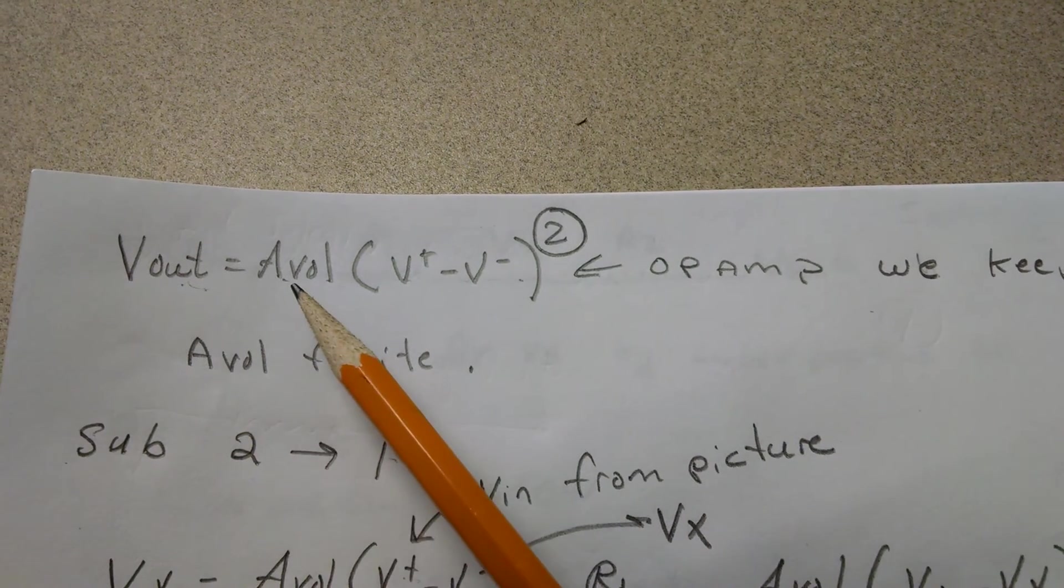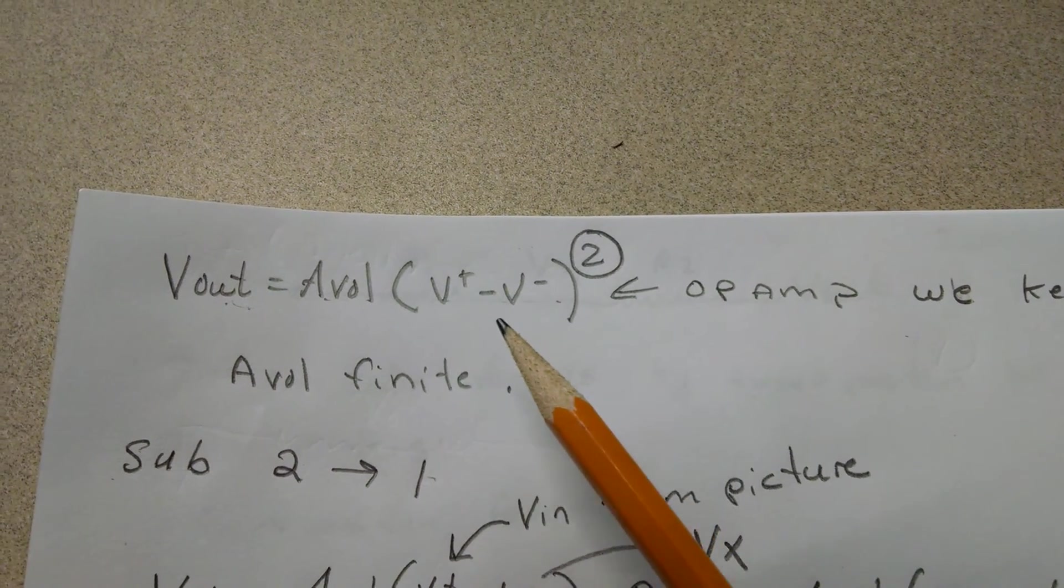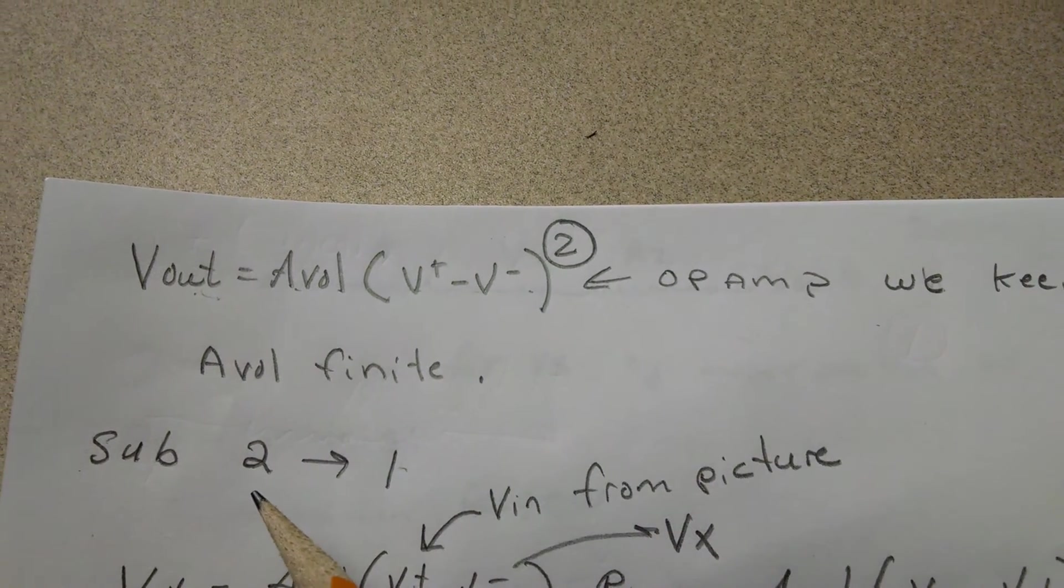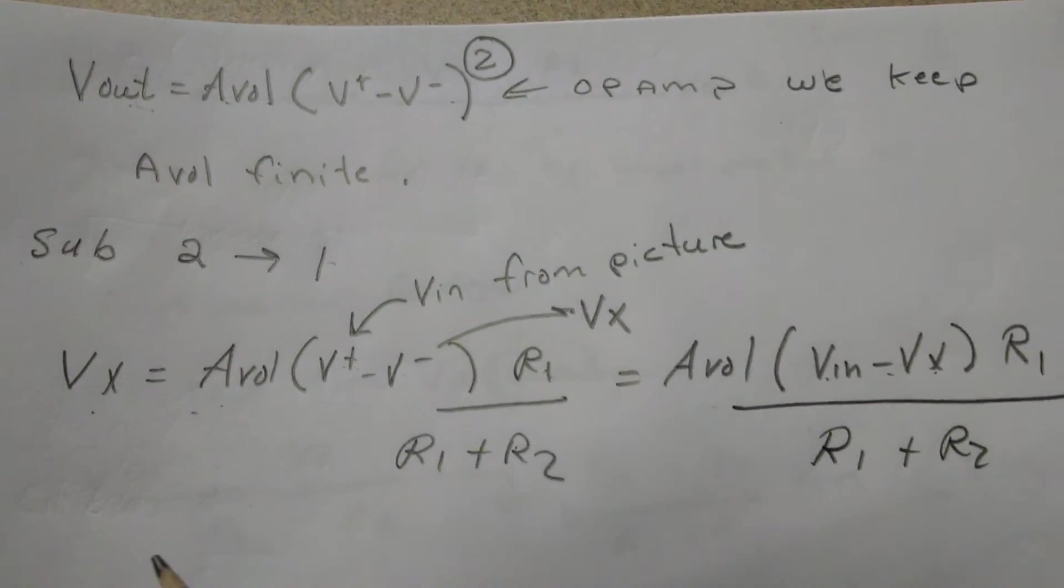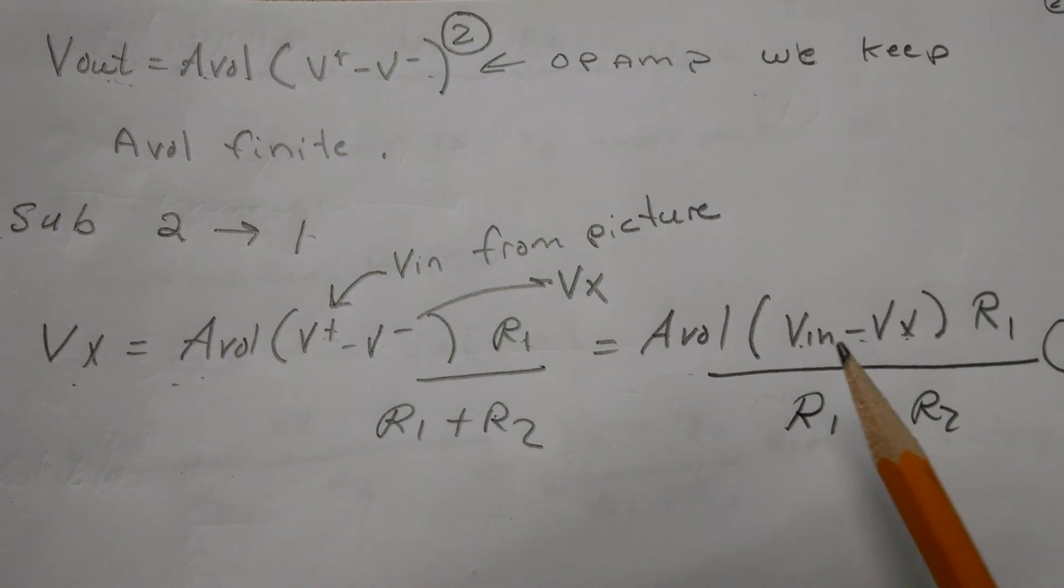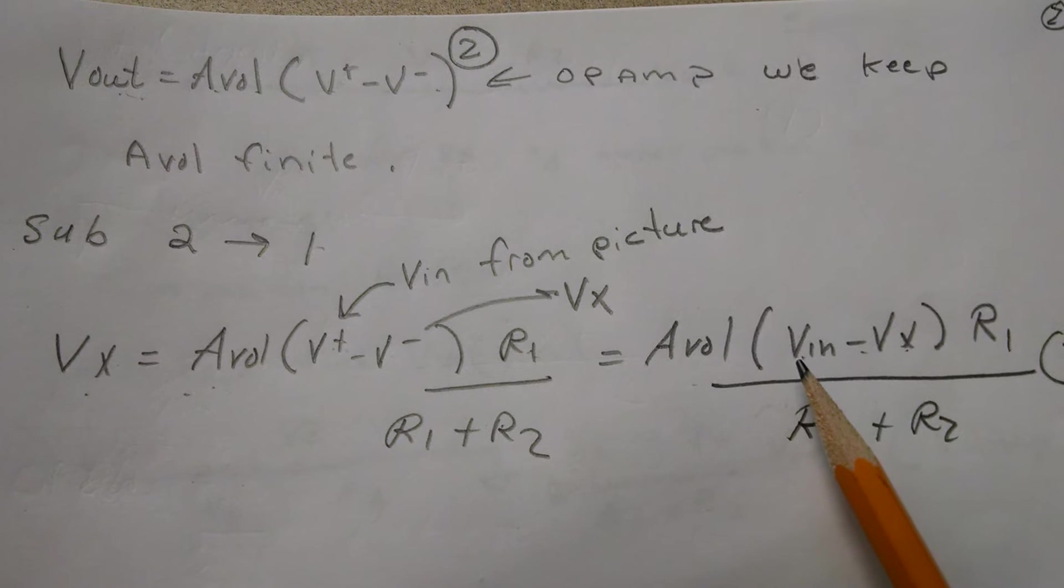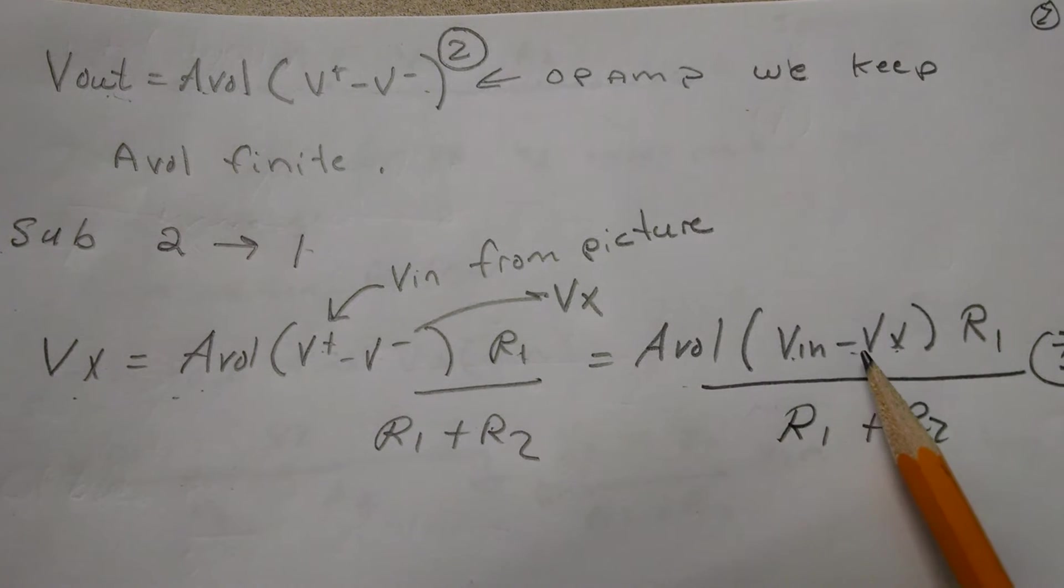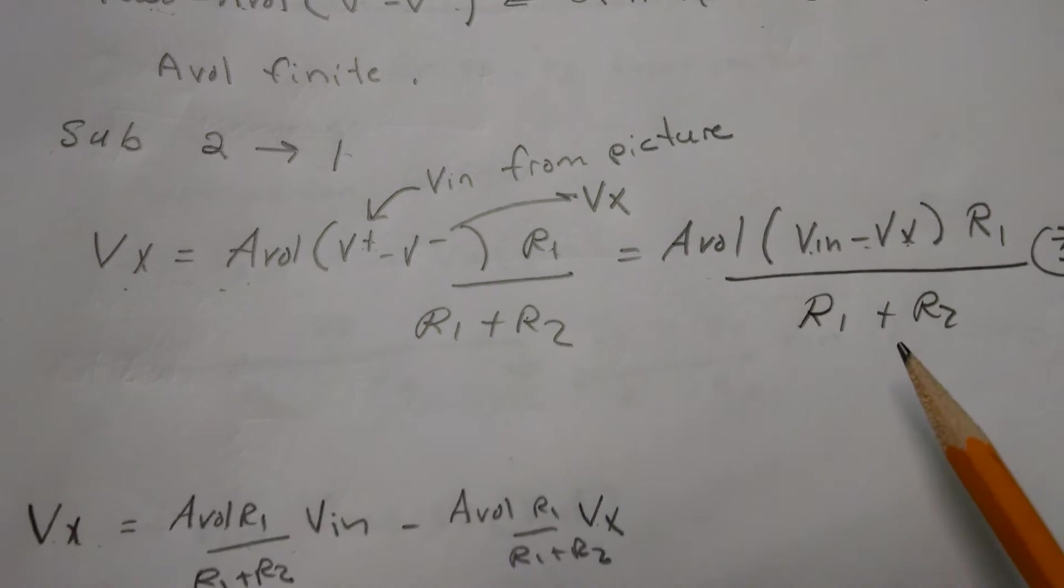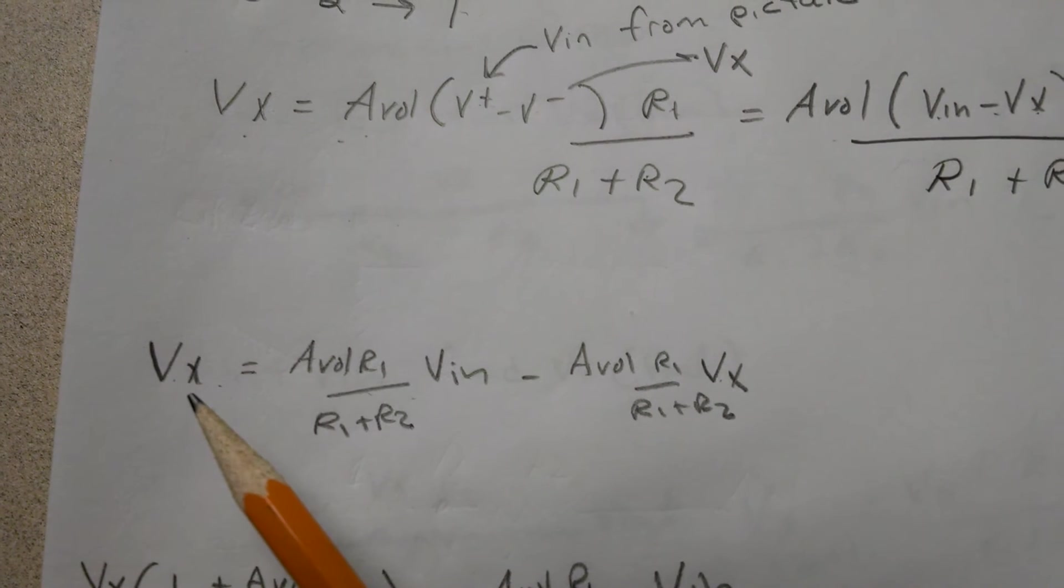Vout equals the open-loop gain times the difference between the two inputs. We substitute equation 2 into 1, and we get Vx equals open-loop gain times (Vin - Vx), because Vin is tied into V+ and Vx is connected to V-.